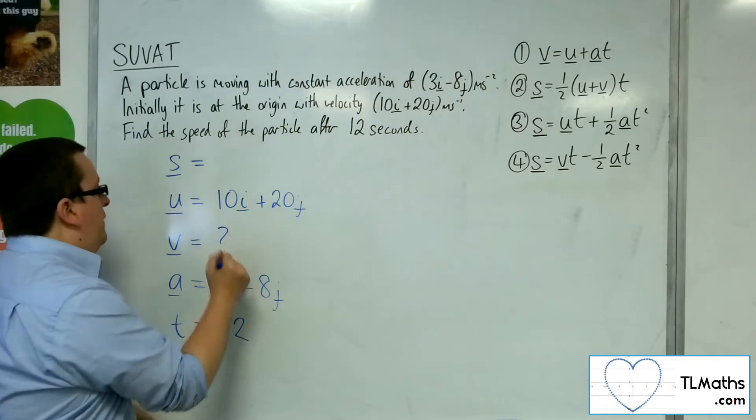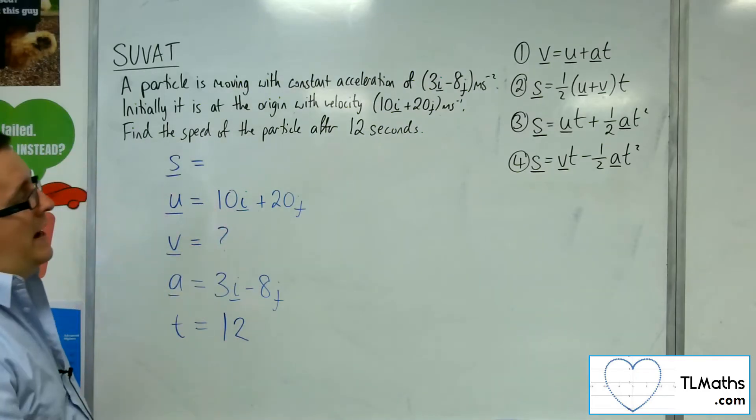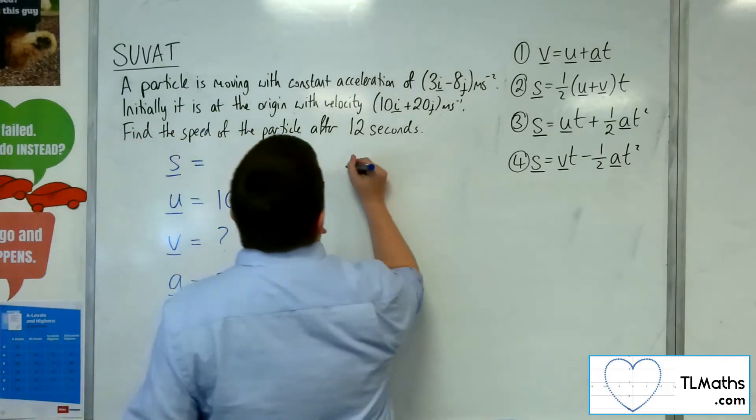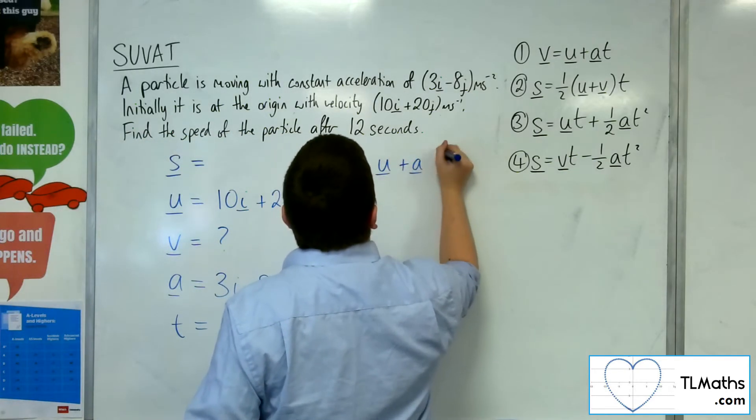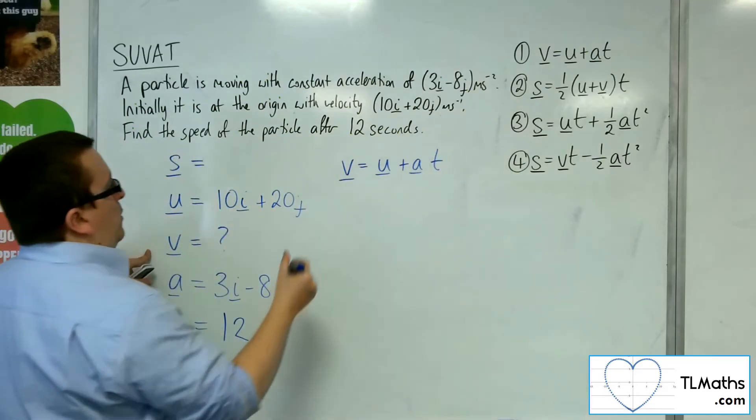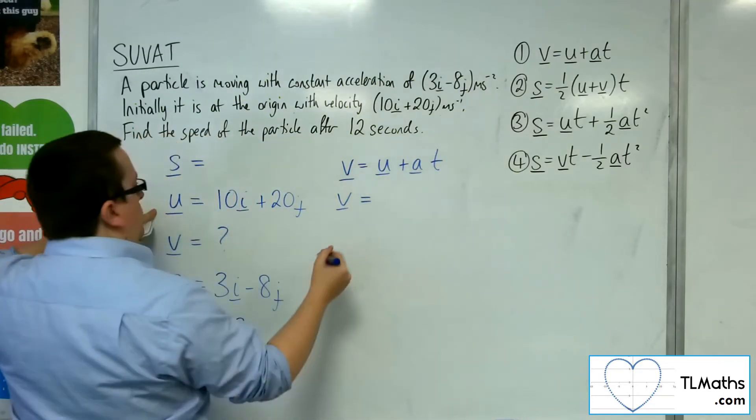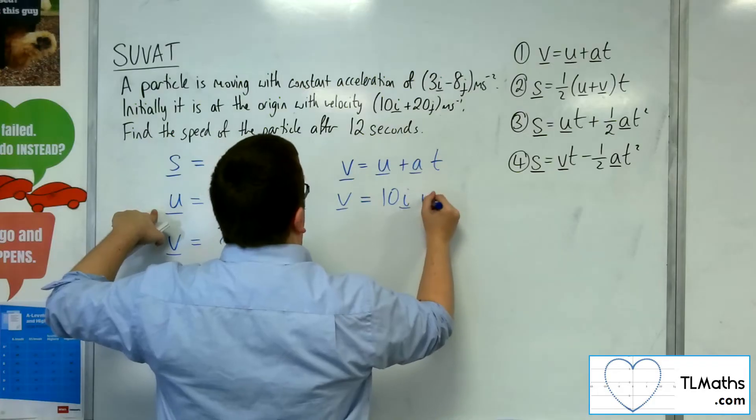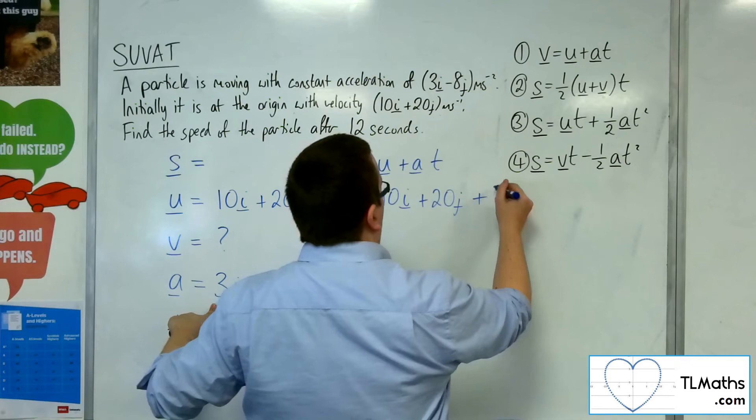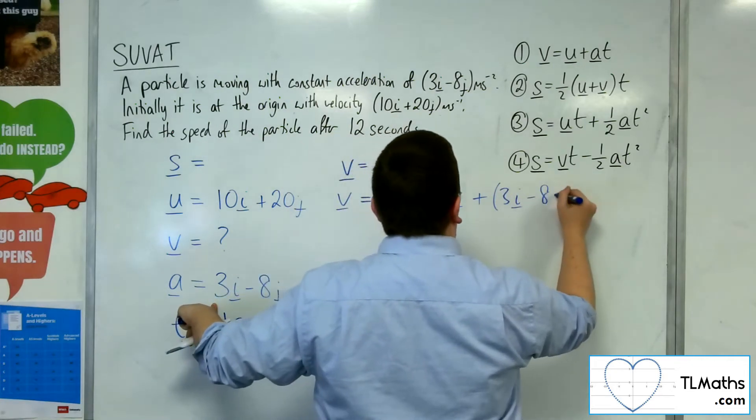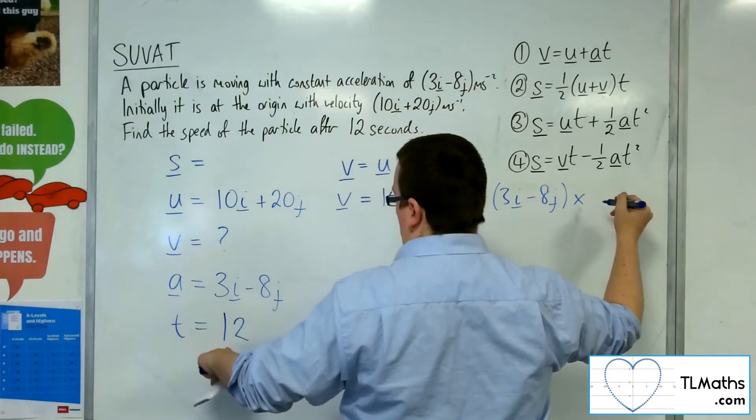So we want to find the velocity. We want the equation that doesn't have s, which is number 1. So v is equal to u plus at. So v is equal to u, the 10i plus 20j, plus a, the 3i minus 8j, times by t.